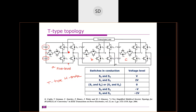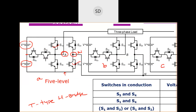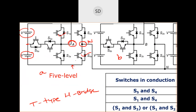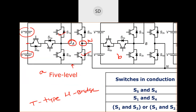The operation is simple. We are measuring the voltage between point A and the neutral point N. For example, if you want 2V voltage across A and N, we need to turn on S1 and S4 to obtain the 2V voltage level. Similarly, if you want V voltage, which switches do we need to turn on?